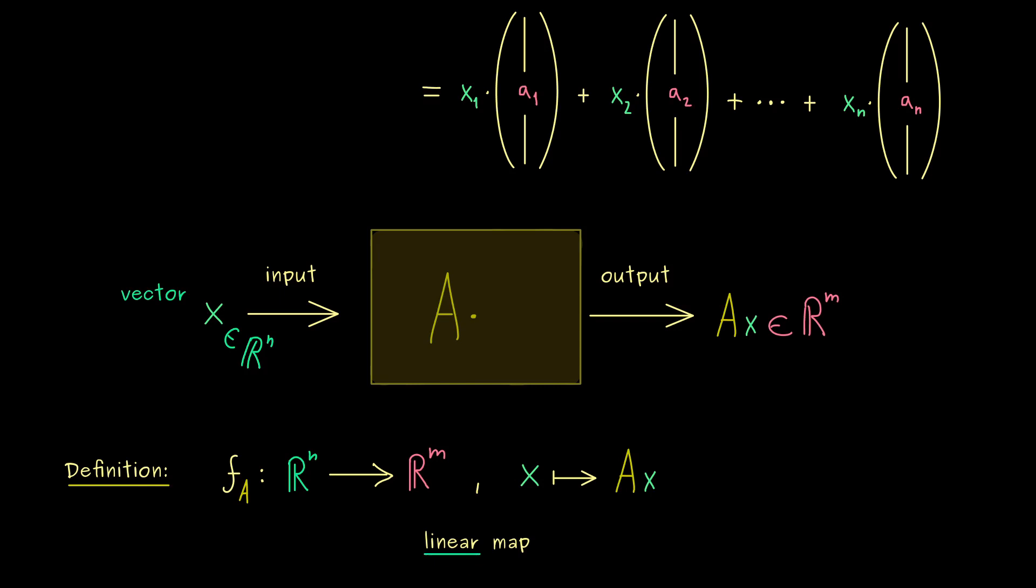And the general concept of a linear map, we will define soon. However, here it's already good to see, that the matrix, as a table of numbers, can be lifted to an abstract mathematical object. Moreover, the information we have in the map, should be the same as we have in the matrix. And indeed, this connection here, will be important throughout the course.